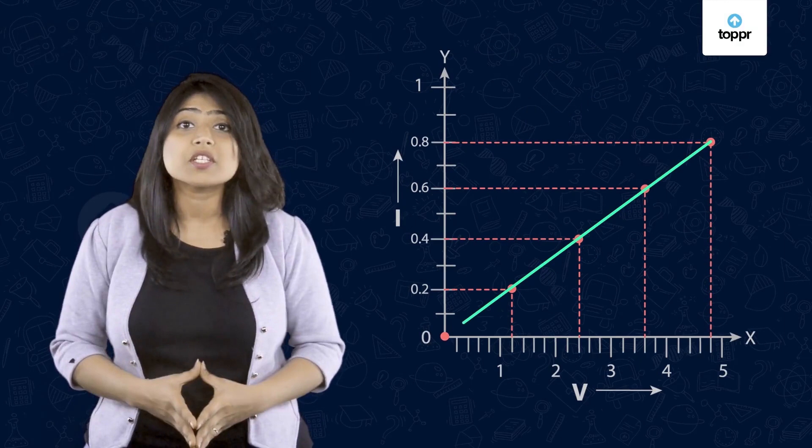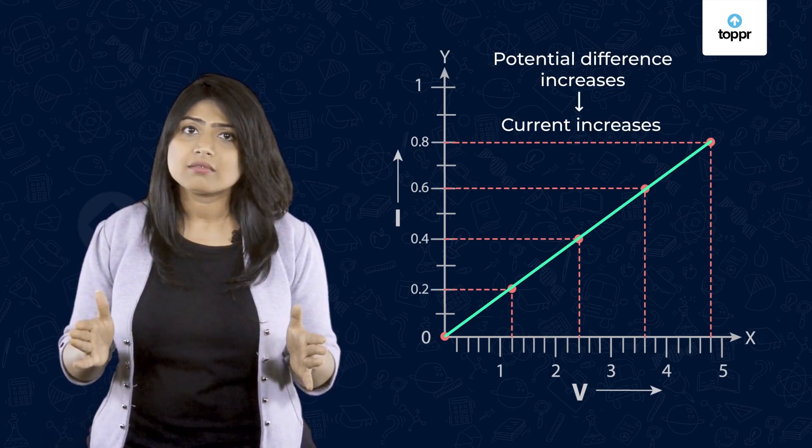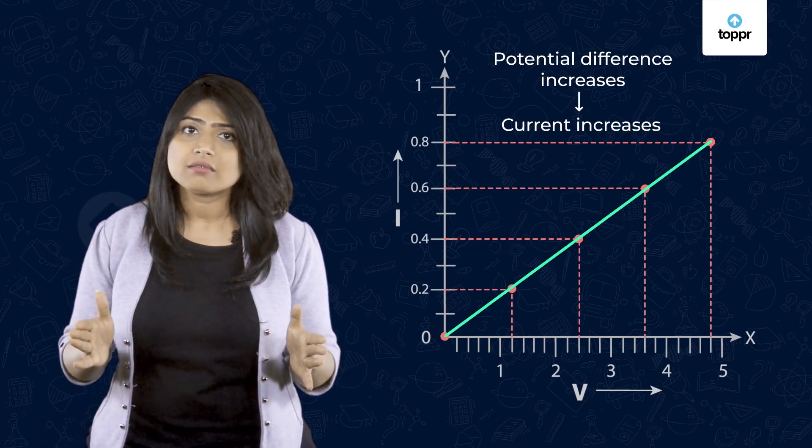Let's extend the straight line to the origin. A straight line plot shows that as potential difference increases, the current through the bulb also increases linearly, or we can say proportionally. For example, when the voltage doubles up, the current also doubles up.